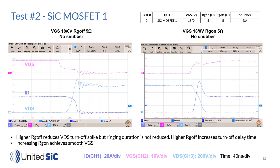In test 2, we increase both RG on and RG off to 5 ohm to see the high RG effect on EMI. On the turn-off side, the peak VDS spike is limited to 1000V, but the ringing duration is not affected. Also, with higher RG off, the turn-off delay time is increased. On the turn-on side, with higher RG on, we achieved a smooth VGS waveform and the peak reverse recovery current is reduced to 94A. We will keep using RG on 5 ohm in the following tests.